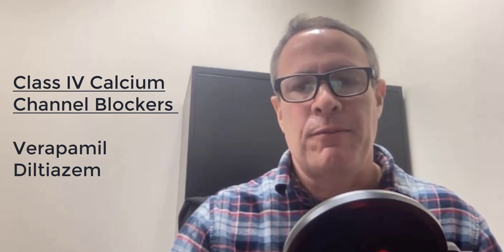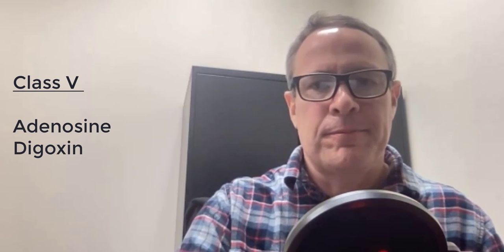So 1, 2, 3, and 4. And then 5, we'll talk about adenosine in a second. Now, what we're going to do is go over the antiarrhythmic agents, or sometimes called the anti-dysrhythmic agents, and we're going to do a little matching. But what I want to give you is a mnemonic that can help you remember which class goes with which medication.